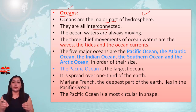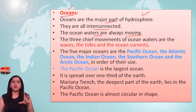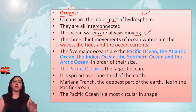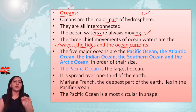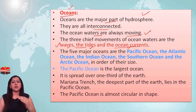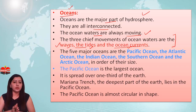The continents are divided by the oceans. Ocean water is always moving. There are three main movements in the oceans: one is the waves, the second is the tides, and the third is the ocean currents. This is very important. We need to remember that the ocean's three main movements are waves, tides, and ocean currents.